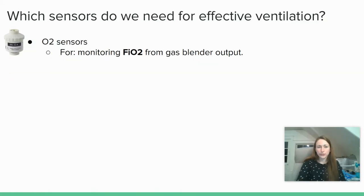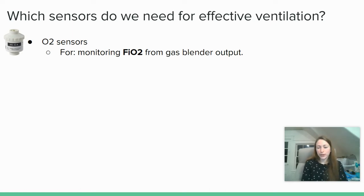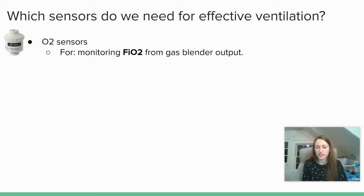Let's first review which sensors we need for effective ventilation and why. The first are O2 sensors, used for monitoring FiO2 — fraction of inspired oxygen — from the gas blender output. I'm operating under the assumption that there will be a gas blender at the wall of the hospital where the medical professional can manually set a value from 21 to 100% O2 concentration. All I need on my device is a display of that oxygen concentration. I'm not using the O2 sensor for any part of the control — just feedback for the user.